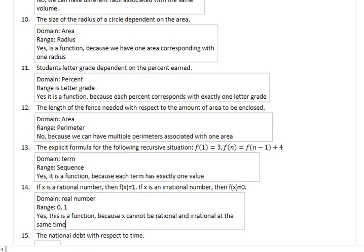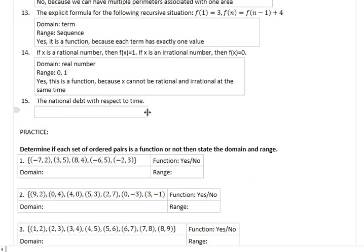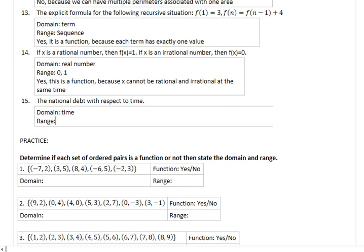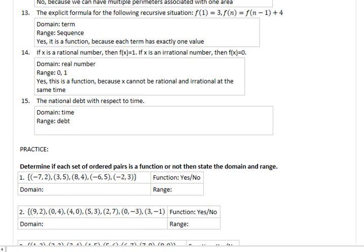Last one: National debt with respect to time. Domain is time, range is debt. Can our national debt be up $10 trillion and 1 at the same time? The answer is no. No amount of creative economics will make that happen. So yes, this is a function, because we cannot have two debt levels at the same time.